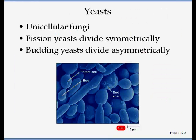Yeasts are non-filamentous and unicellular. They are typically spherical or oval. Yeasts divide by budding. One of the common ones we hear about is Saccharomyces — the yeast that makes bread rise. You can see a bud coming out and eventually separating; more buds come out of one cell, so it's an asymmetrical division.